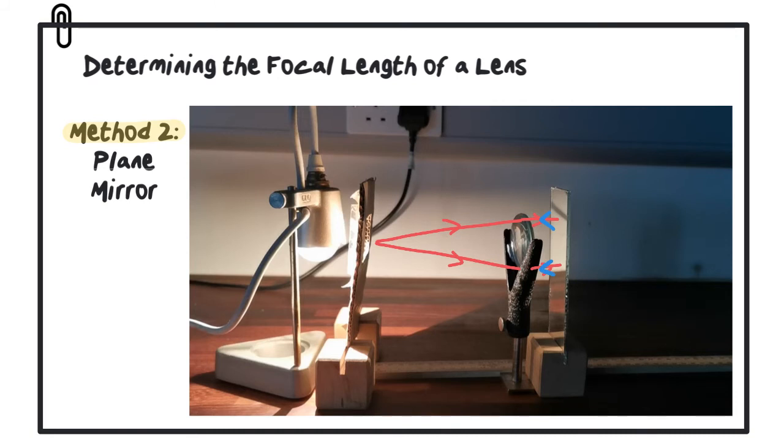Once it enters the lens, it refracts closer together again, and we end up with the focused image right beside the object. That's why when we measure the distance between the object and the lens, this is the focal length.